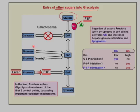Now mannose and fructose can both be converted into fructose-6-phosphate; however, with fructose that only occurs in the muscles. In the liver, which is the primary site of metabolism for fructose — most fructose goes into the liver, some goes into the muscle — fructose gets converted into glyceraldehyde phosphate.